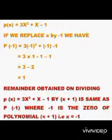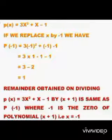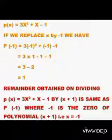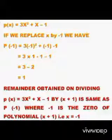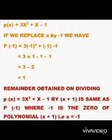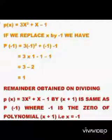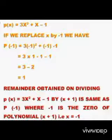That is, x + 1 = 0 means x = -1. When you divide 3x² + x - 1 by x + 1, what did you get? Remainder 1. And when you substitute x = -1, you also get the remainder 1.